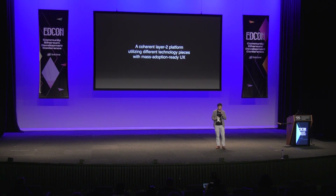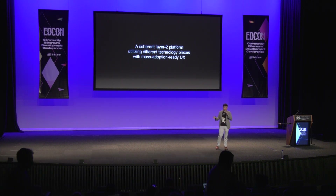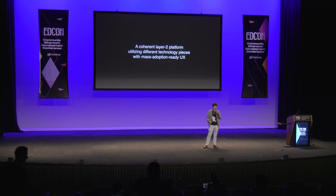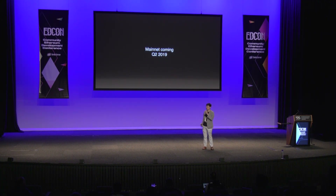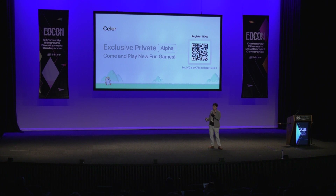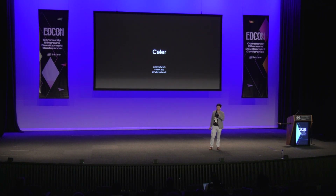For what's next for Celer, we're thinking about moving forward towards a coherent layer 2 platform that utilizes different technology pieces — not only state channels, but also, in the state-guardian network, plasma-like side chains. We think the boundary between sidechain and state channel may not be that strict — we're utilizing different technology pieces with mass-adoption-ready UX. Mainnet is coming in Q2 2019. With all the experiences gathered from the testnet runs, we just launched a new private alpha to prepare for our mainnet launch. If you're interested, scan the QR code or go to bit.ly/celerx-alpha-registration and we'll invite you to the private alpha. Thank you.